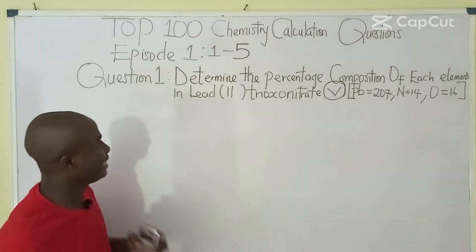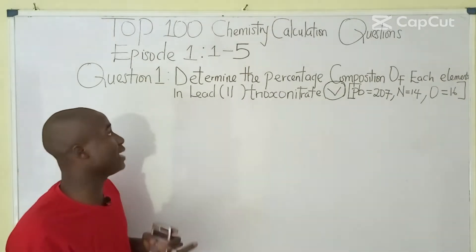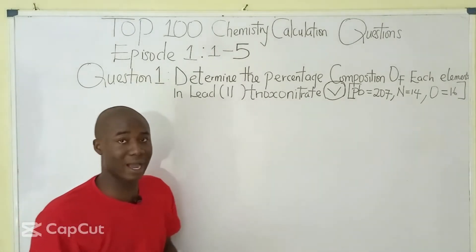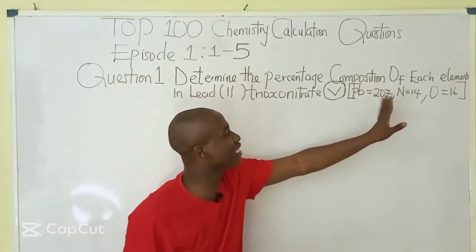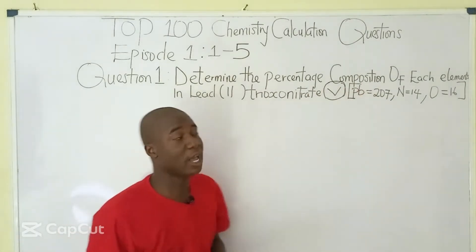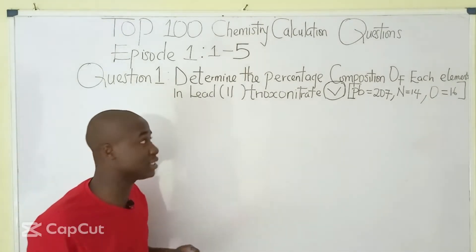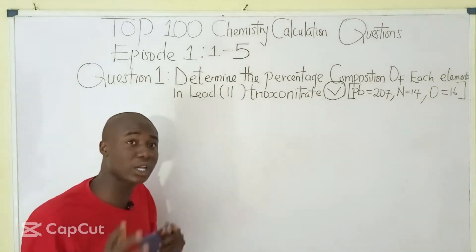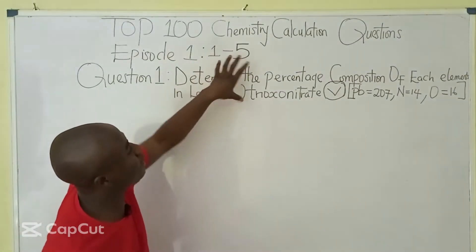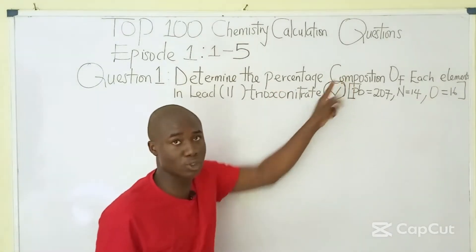The first question says: determine the percentage composition of each element in lead(II) trioxonitrate(V), and the atomic masses of the elements that make up this compound were given. This particular question is on the concept of percentage composition.